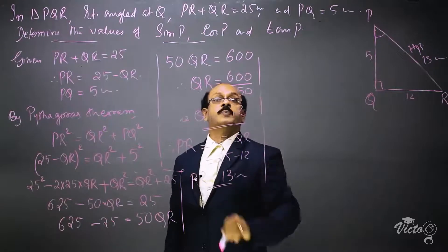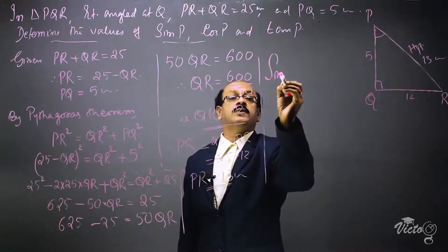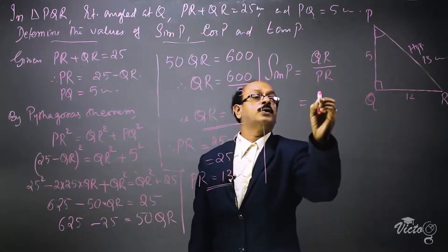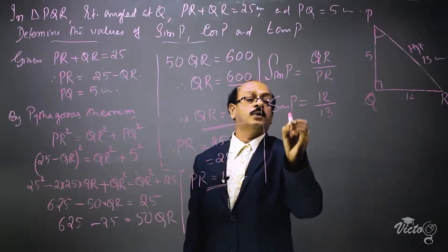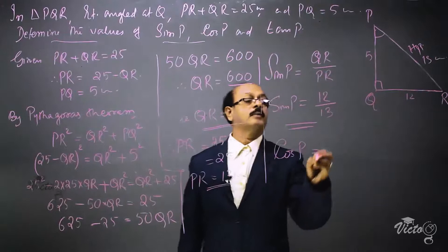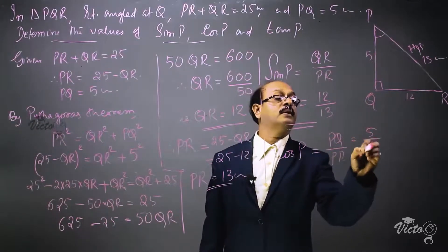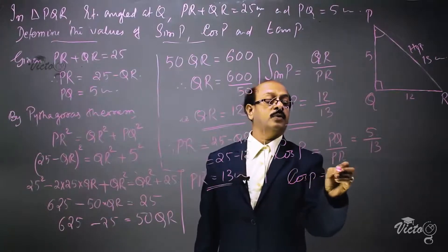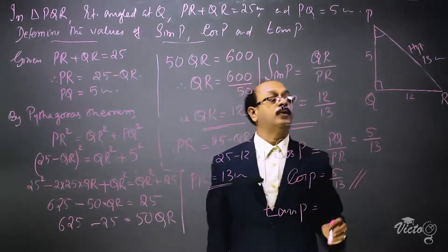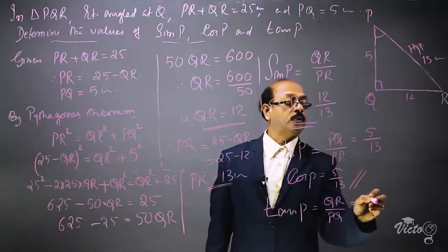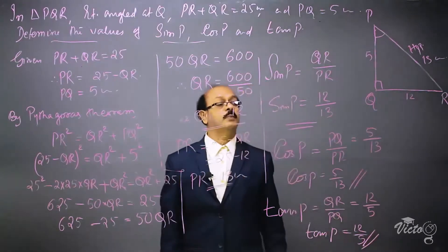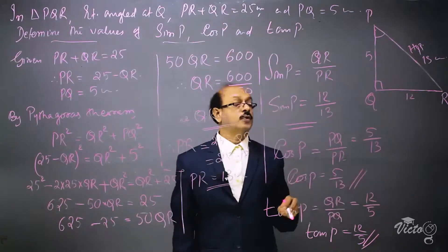Now we can write the values of sin P, cos P, and tan P. Sin P equals opposite side over hypotenuse, which is QR over PR, equal to 12 over 13. Cos P equals adjacent side over hypotenuse, which is PQ over PR, equal to 5 over 13. Tan P equals opposite side over adjacent side, which is QR over PQ, equal to 12 over 5. So we have sin P = 12/13, cos P = 5/13, and tan P = 12/5.